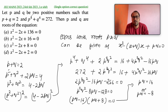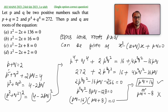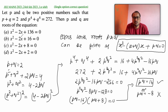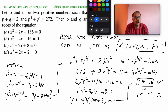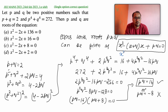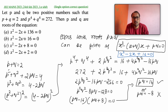But in the question it is said that p and q are two positive integers, so pq equals minus 8 is not possible. Therefore pq equals 16. The required equation becomes x squared minus (p plus q)x plus pq equals zero, which is x squared minus 2x plus 16 equals zero. So our answer is x squared minus 2x plus 16 equals zero, which is option B.